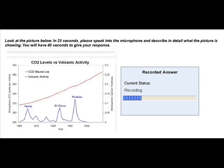This chart shows us CO2 levels versus volcanic activity. So what we're looking at here is a comparison between the atmospheric CO2 parts per million compared to the stratospheric optical thickness. It has three points that are very important.